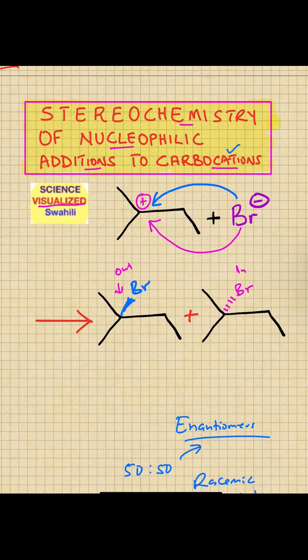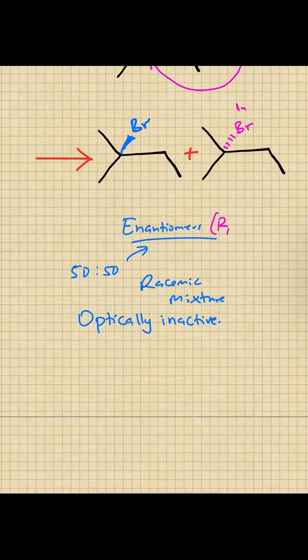Because of that, you end up with a mixture of enantiomers. Enantiomers are stereoisomers that are mirror images but cannot be superimposed. So when you have a mixture of enantiomers, the R and S isomers for example, you end up with an equal mixture of enantiomers, a 50-50 mixture.